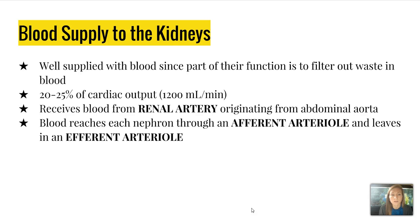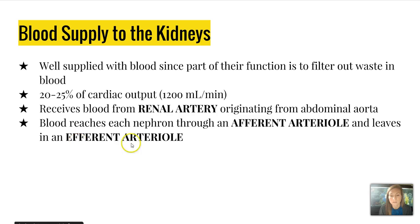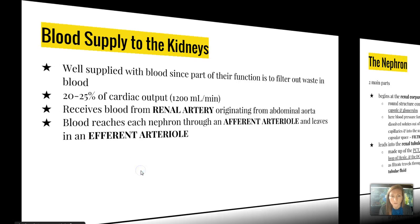Blood supply to the kidneys: they are well supplied with blood, since part of their function is to filter out waste. About 20 to 25 percent of the cardiac output — about 1,200 milliliters per minute — comes from the renal artery originating from the abdominal aorta. Blood reaches each nephron through an afferent arteriole and leaves through an efferent arteriole. Think of efferent as the exit to remember the difference.